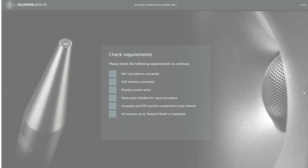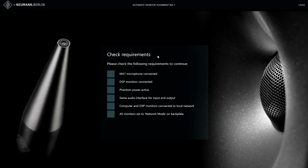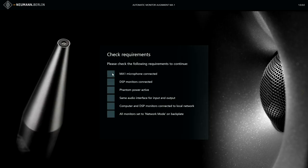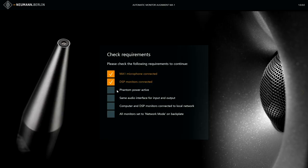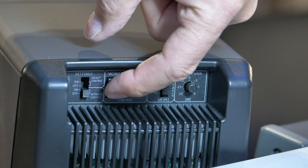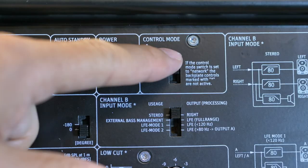Here are the requirements which need to be checked. The microphone needs to be connected to your audio interface. Once it's okay and you have checked it, you tick the box. The DSP monitors are connected via the audio connection. The phantom power on your audio device is switched on. The same audio interface is connected to your microphone and the loudspeakers — this is important. The computer and DSP monitors are connected to your local network, and all loudspeakers or monitors are set to network mode on their back. There is a small switch on the back that has to be set to network mode. Once all of this is ticked, you have the option to go to the next screen.